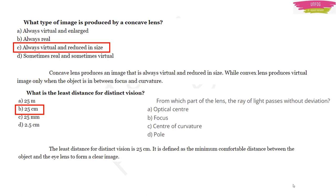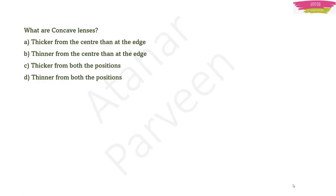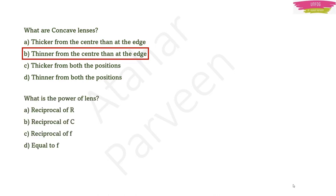Question: From which part of the lens does a ray of light pass without deviation? The answer is the optical center. Question: What are concave lenses? They are thinner from the center than at the edge — thicker at the edges and thinner in the center — option B. Question: What is the power of a lens? It is the reciprocal of the focal length — option C.